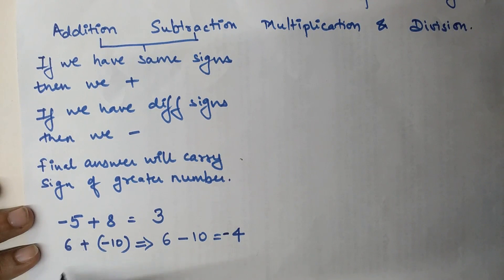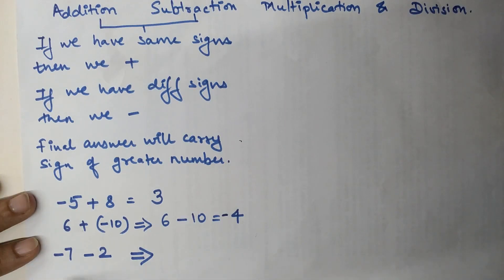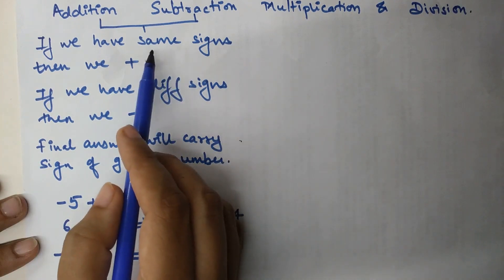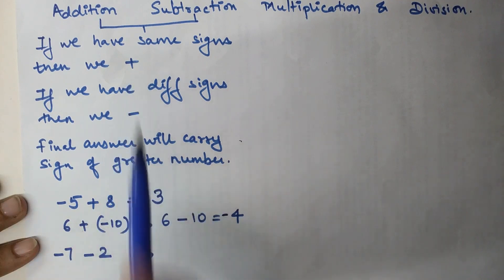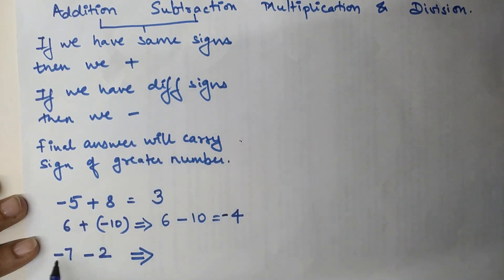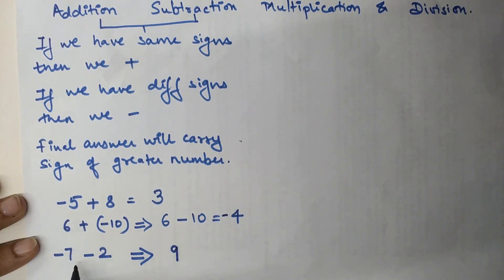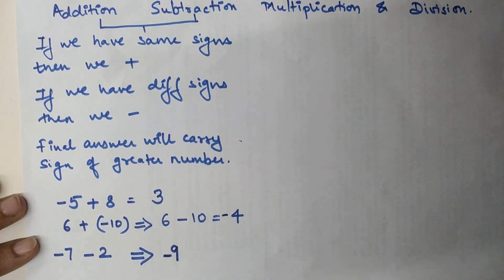Now let's say we have minus 7 minus 2. Both numbers are negative, so both signs are the same. When you have the same signs, the operation is addition. So we do 7 plus 2, which is 9. The sign carried is that of the bigger number, which is 7, and its sign is negative. So the final answer is negative 9.